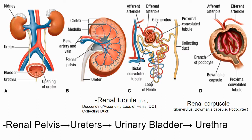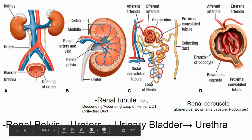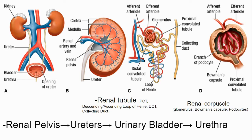As we have the renal tubule, our corpuscle is the glomerulus surrounded by the Bowman's capsule, and then we have the tubule: the proximal convoluted tubule, the ascending and descending loops of Henle, the distal convoluted tubule, and the collecting duct. From the collecting ducts it heads to the renal pelvis, then to the ureter, down to the urinary bladder, and out the body through the urethra.